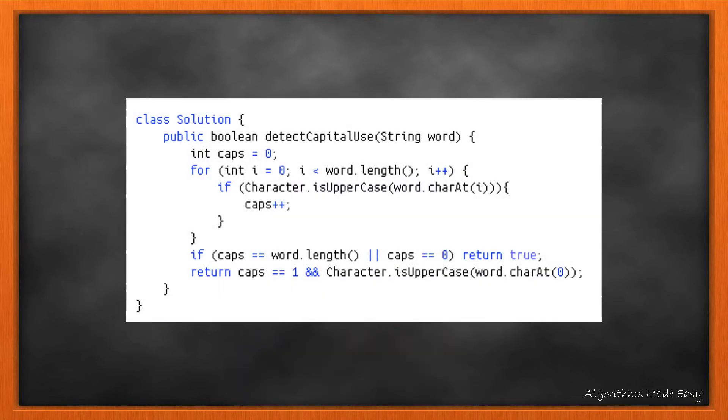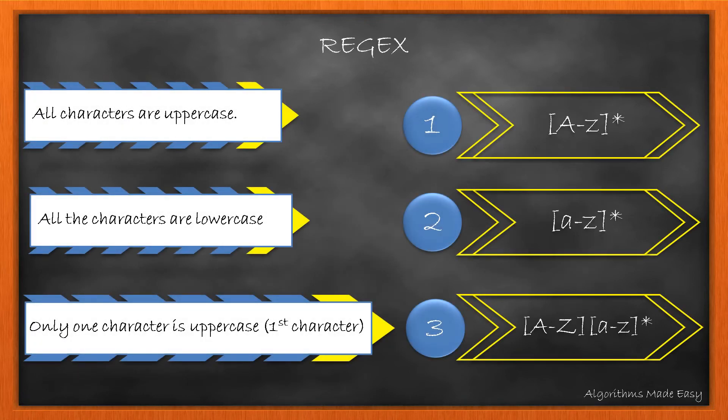Here is the actual code snippet for the method. Rather than writing the loop, we can use a regular expression that will internally check the characters. This will reduce the code to a one-liner. For all three cases, the regular expression can be written as follows. We can combine these three into one single pattern that will look like this.